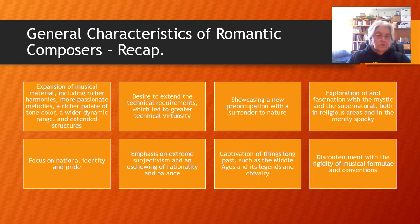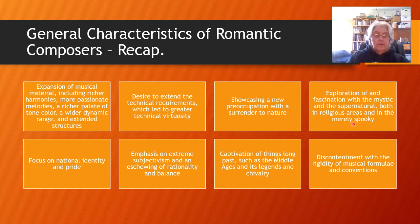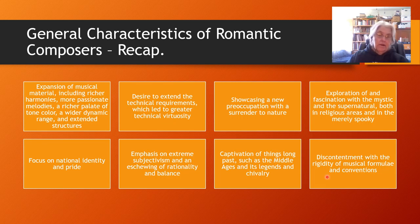Here is a recap list of general Romantic characteristics: more musical material, richer palette, bigger tone color, wider dynamic range, longer structures, more technical virtuosity, more preoccupation with nature, interest in the supernatural and religion, focus on national pride and expanded nationalism, everything subjective instead of rational, real interest in long-ago things like the Middle Ages and chivalry, and a desire to get away from the rigidity of the previous classical era's musical forms.